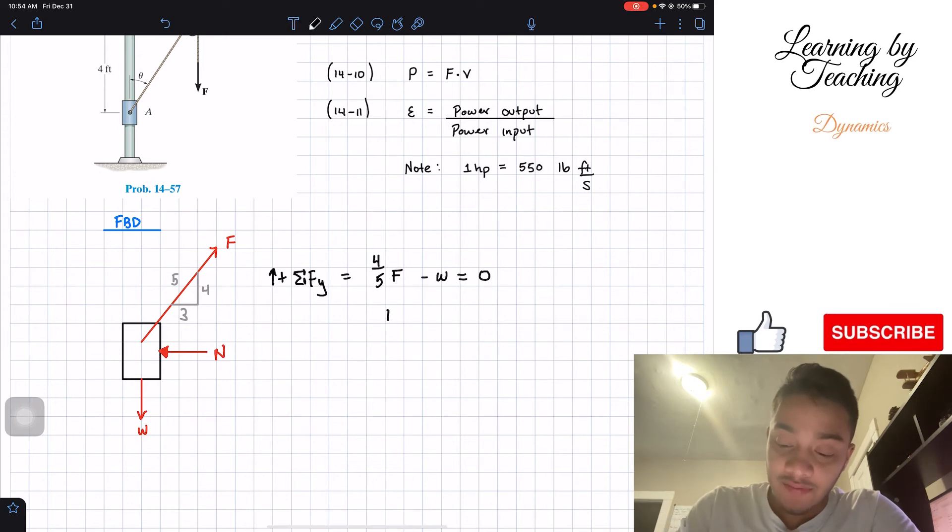So if we solve for F, that is going to be W times 5 divided by 4. So we can plug in the numbers, which is 10 times 5, and all this divided by 4. So if we plug this into our calculator, we can conclude that this is a total of 12.5 pounds.